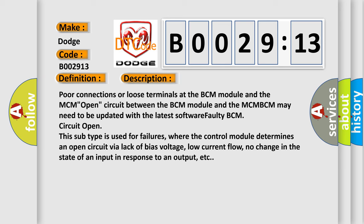This subtype is used for failures where the control module determines an open circuit by a lack of bias voltage, low current flow, no change in the state of an input in response to an output, etc.